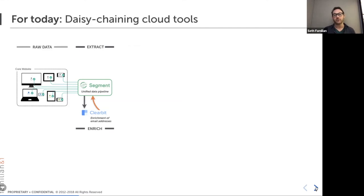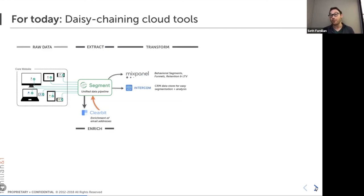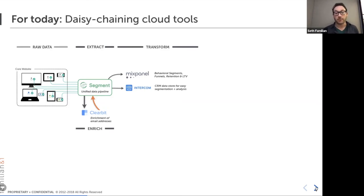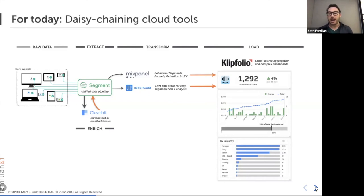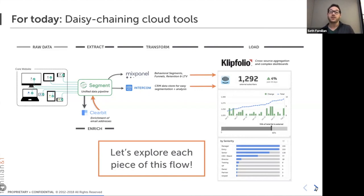I can then pipe that enriched data downstream to a number of different sources simultaneously — an analytics platform like Mixpanel, or Amplitude, a marketing automation platform like Intercom or Drift. And I can not just understand who my audience is and automate marketing messaging towards them — I can roll that data up into a unified dashboard that tells me everything that's happening with my audience and how it's growing thanks to my marketing efforts. This is the notion of daisy chaining, and I'd like to explore each piece of this flow to help you understand why each of these tools is really useful both independently and together.